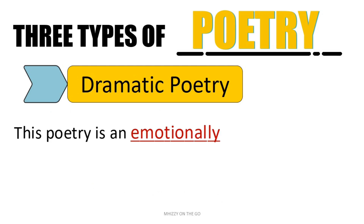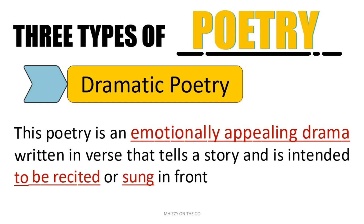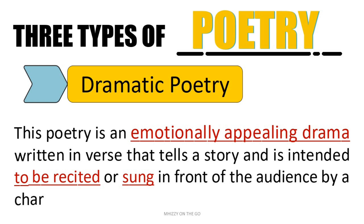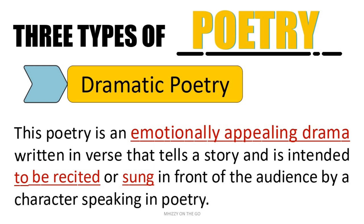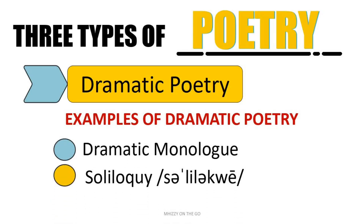Dramatic poetry is an emotionally appealing drama written in verse that tells a story and is intended to be recited or sung in front of an audience by a character speaking in poetry. Examples include dramatic monologue and soliloquy. The main difference between a monologue and soliloquy exists in the listeners: a monologue is intended to be heard by others, while a soliloquy is a portrayal of the thoughts of the character.